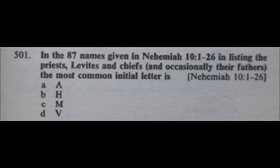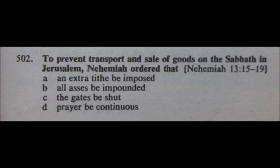Question 502: To prevent transport and sale of goods on the Sabbath in Jerusalem, Nehemiah ordered that A) an extra tithe be imposed, B) all asses be impounded, C) the gates be shut, or D) prayer be continuous. I'm going to go for C, the gates be shut. That seems to make the most sense, so for 502 my answer is C.